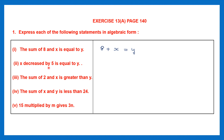Question 2: x decreased by 5. Decreased means it's going to become less, so that's minus. x decreased by 5 is equal to y, so let's write that: x minus 5 is equal to y.